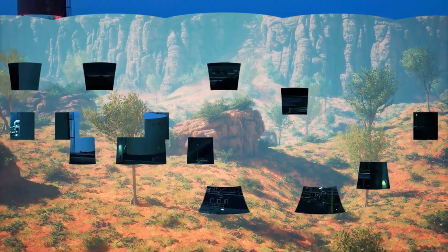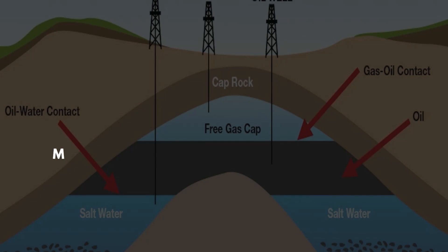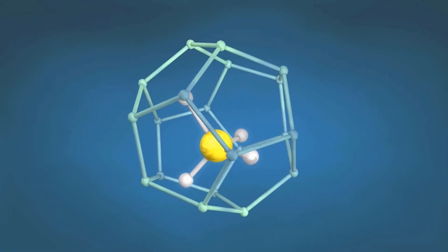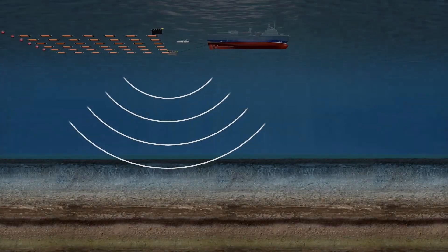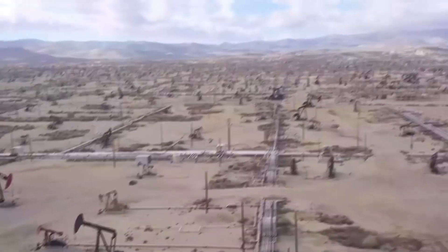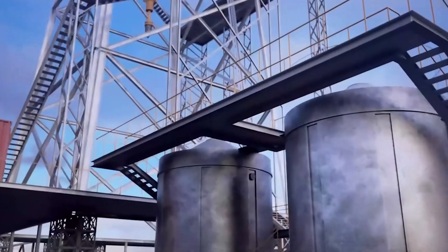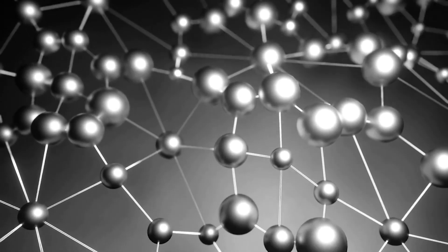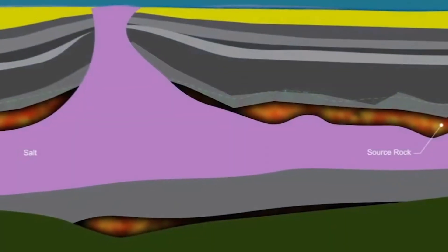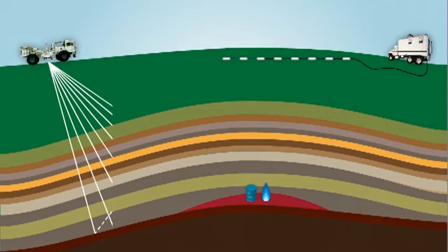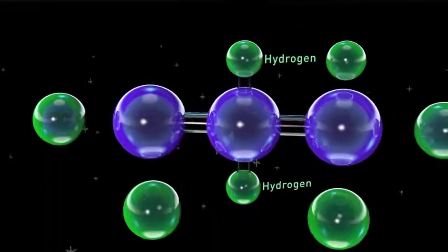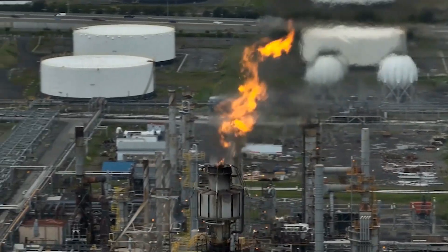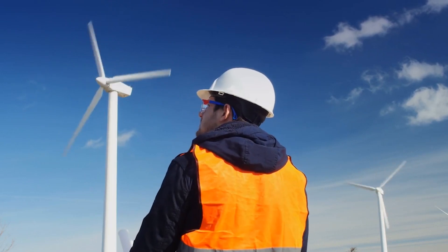Advances in geology, chemistry, and technology have revolutionized our understanding of hydrocarbon formation. Modern exploration techniques such as seismic surveys, magnetic resonance, and satellite imaging allow scientists to identify potential oil and gas reserves with remarkable accuracy. Geologists study the characteristics of source rocks, reservoir rocks, and cap rocks, and analyze the geological history of an area including its sedimentation patterns and tectonic activity. The science of hydrocarbon formation continues to evolve, with researchers exploring alternative sources such as shale gas and oil sands, essential for meeting global energy demands and transitioning to more sustainable energy sources.